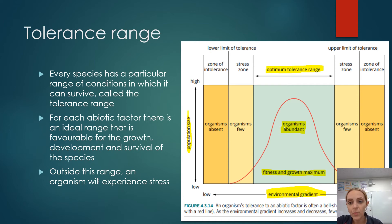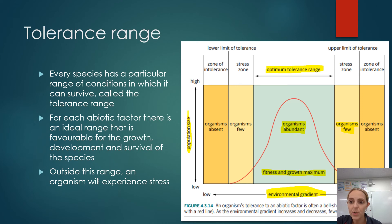In the stress zone — like what's happening now with global warming — water temperature increases and quality declines. The population size decreases because we're outside the range the organism can tolerate. If conditions continue beyond what the organism can survive, that's called the zone of intolerance, where we see an absence of organisms, which can lead to extinction.